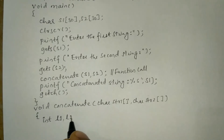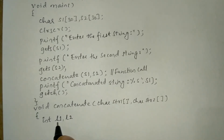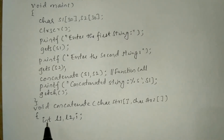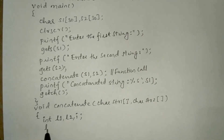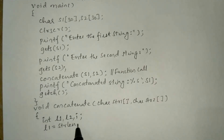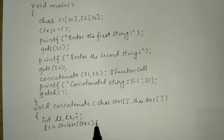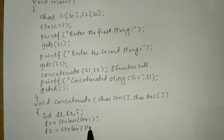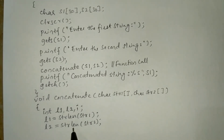I'll declare l1 and l2 — that is length one and length two of string one and string two respectively — and i for iteration. I write l1 equal to strlen(str1) to find out the length of the first string. Next, l2 is equal to strlen(str2), so the length of the second string will be determined.